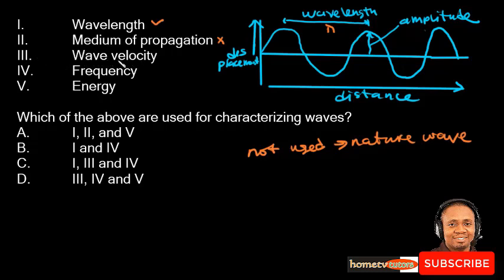Option 3: wave speed — wave speed has to do with the horizontal speed of a point on the wave as it propagates, measured in meters per second. So it is also used in characterizing waves. Option 4: frequency — frequency is the number of complete waves that pass a point per second, measured in inverse seconds or hertz. This is also used for characterizing waves.